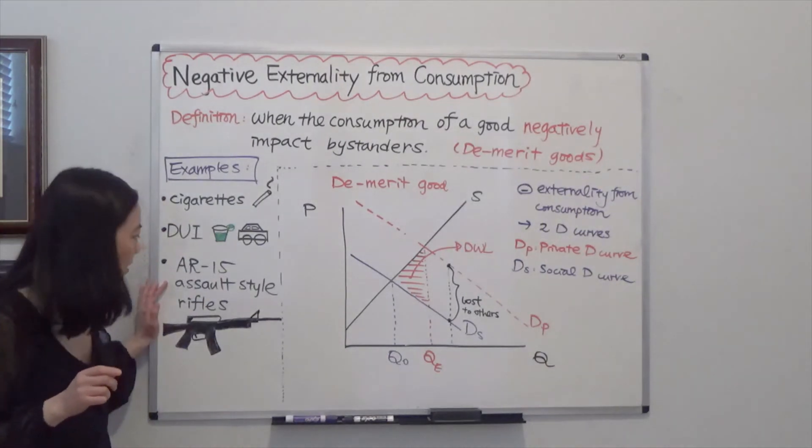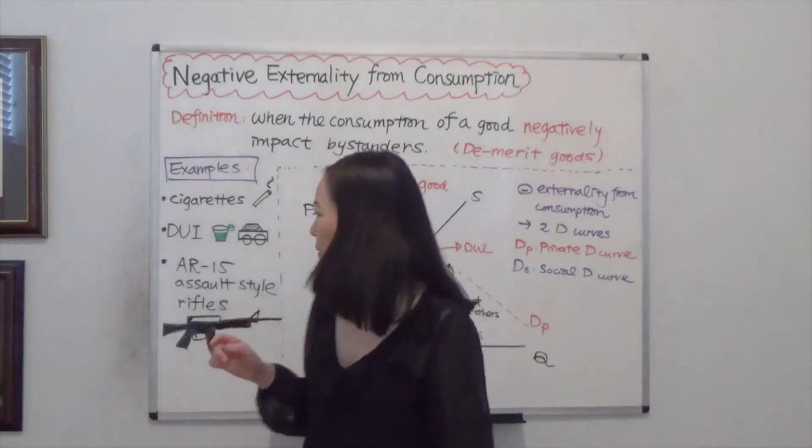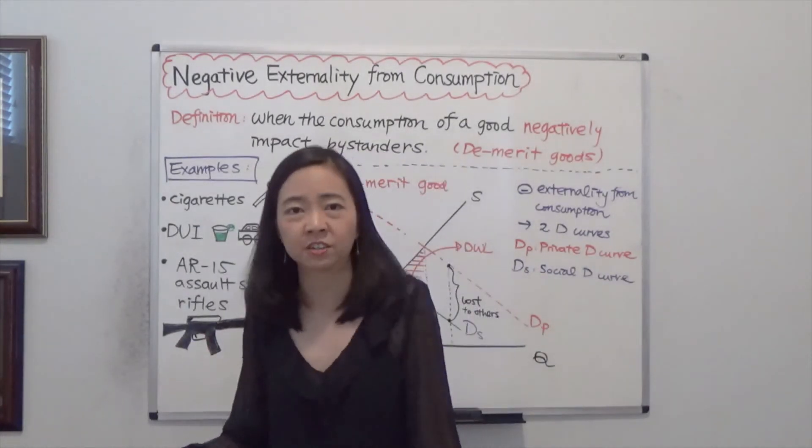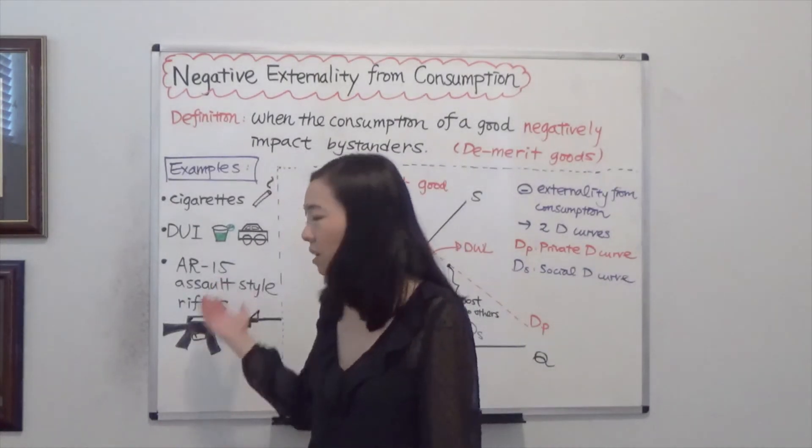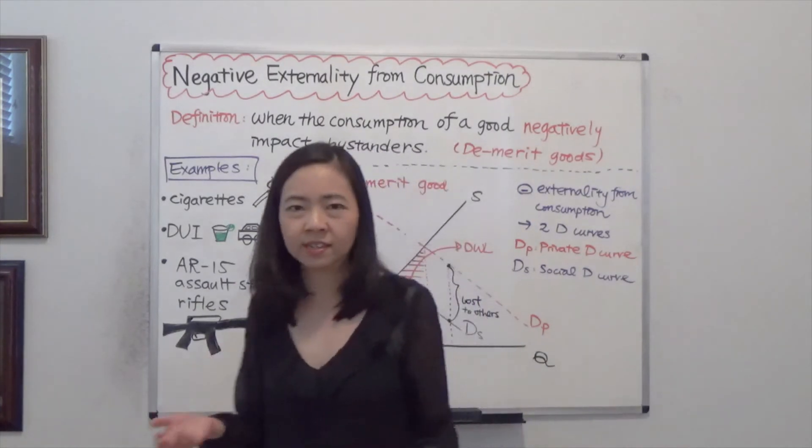And finally, AR-15. You can see that the government is not doing too much, except for offering prayers and thoughts for massacres with AR-15. And you will be asking, why is that?